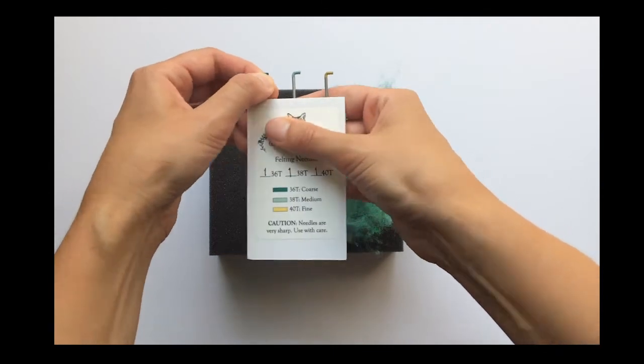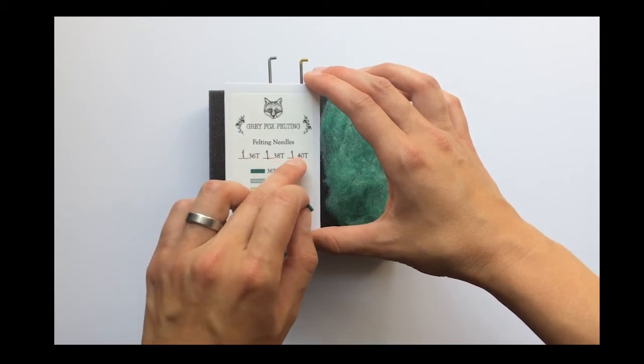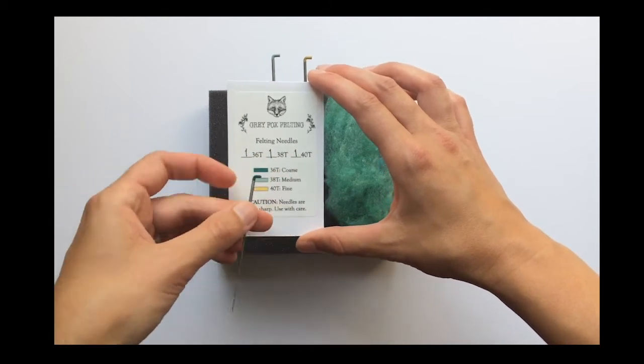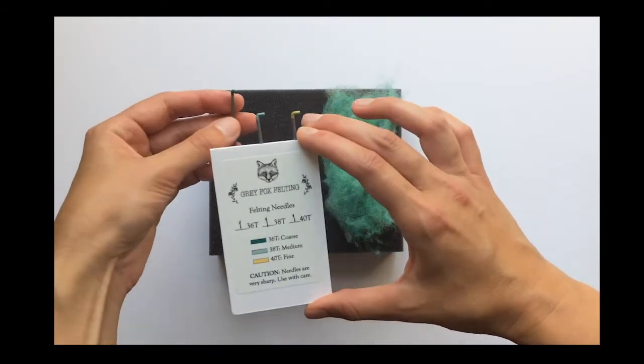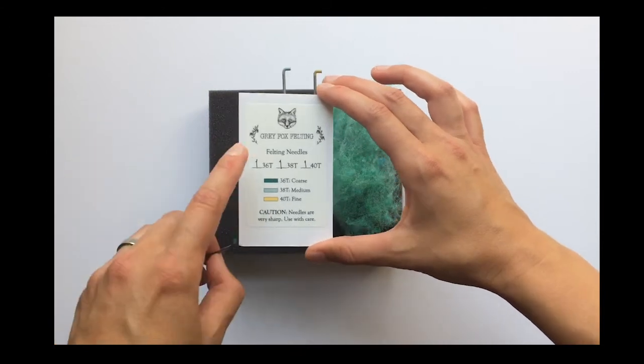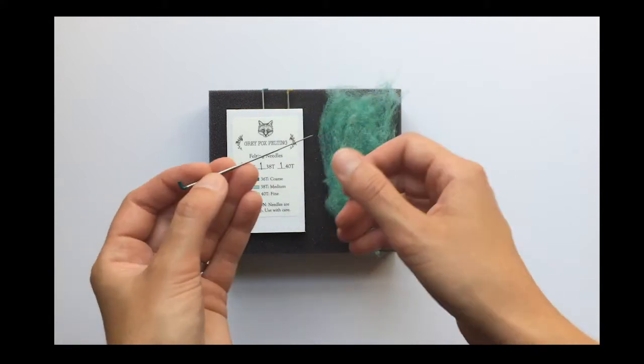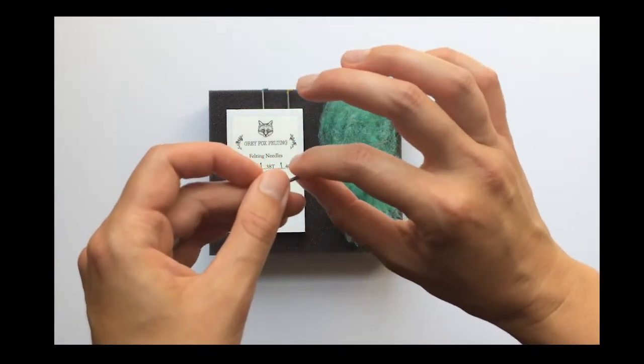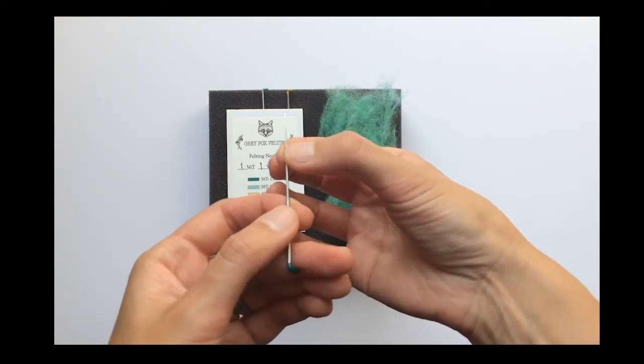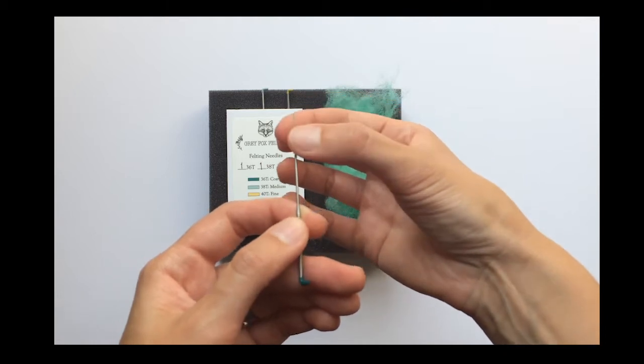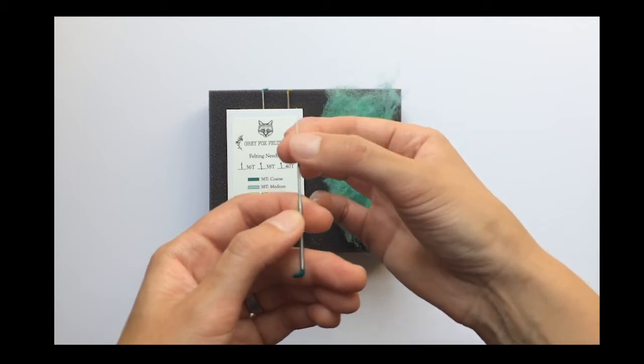So the first one I have is a number 36T. So if you look at all the numbers here and you can see they're all color-coded too, because if you're anything like me, you might lose them. I do all the time and then at least I know what size it is. So the T on the end, that refers to the shape of the needle at the end. The top part of the needle is round and cylindrical, but at the bottom part, it's actually triangular. So the T stands for the triangle. So this part at the end, the part that's sharp and then has the barbs, is three-sided. There's barbs on each side.